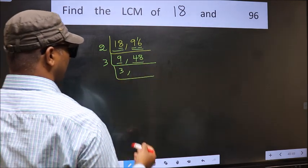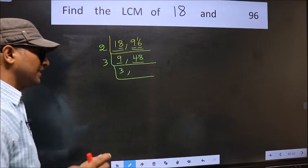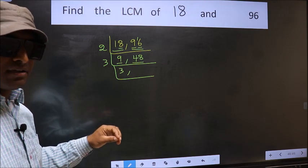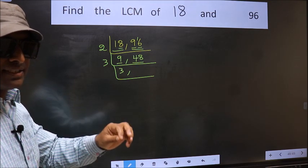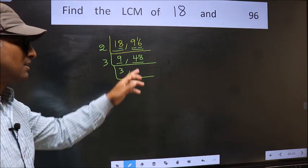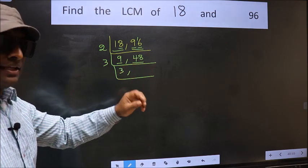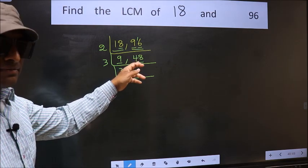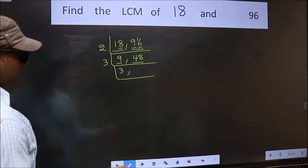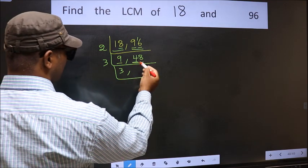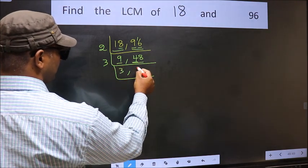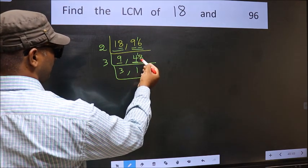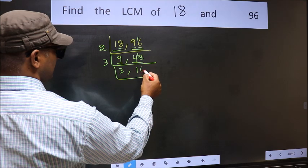Now divide by 3. To check whether 48 is divisible by 3, we add the digits: 4 plus 8 equals 12. Is 12 divisible by 3? Yes. So 48 is also divisible by 3. For 9: 9 is 3 threes, so 9 divided by 3 is 3. For 48: 4 minus 3 is 1, carried forward gives 18; 3 sixes are 18, so 48 divided by 3 is 16.